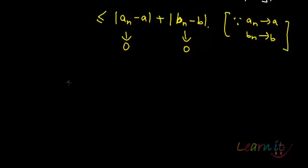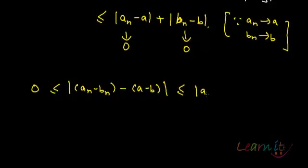This means that a_n minus b_n minus (a minus b) is getting squeezed between terms which are tending towards 0. 0 plus 0 will give me 0.